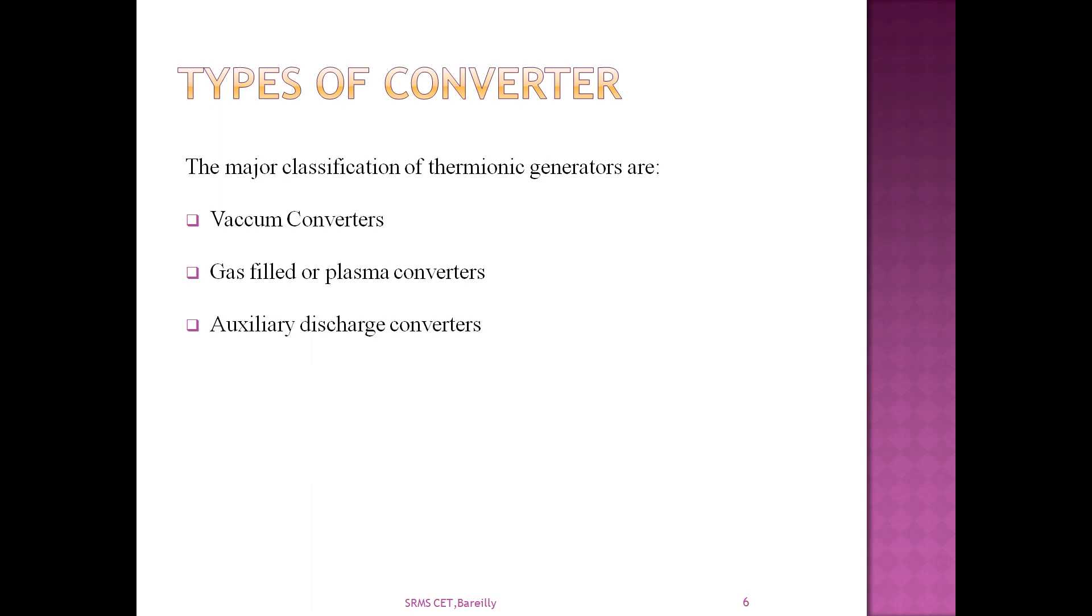Next are the types of thermionic converters. Thermionic converters are basically classified into three types: vacuum converters, gas filled or plasma converters, and auxiliary discharge converters. The vacuum converters are a type of thermionic converter which uses a very small gap between the emitter and collector electrodes, typically of the order of 0.025 to 0.038 millimeters, which is used to minimize the effect of electronic space charge. At a temperature of 800 degrees Celsius approximately, the electric power converted is near 0.1 to 1 watt per square centimeter of emitter surface. As a result, the vacuum converter has had only limited practical application because designing such converters with small spacings is difficult.